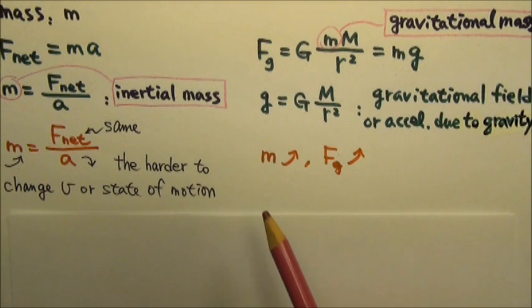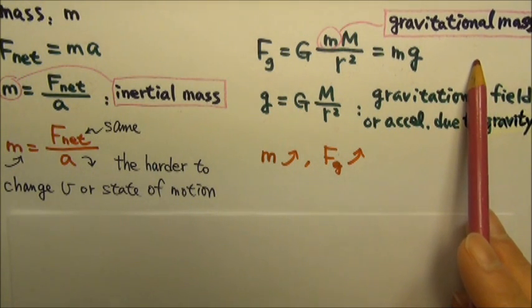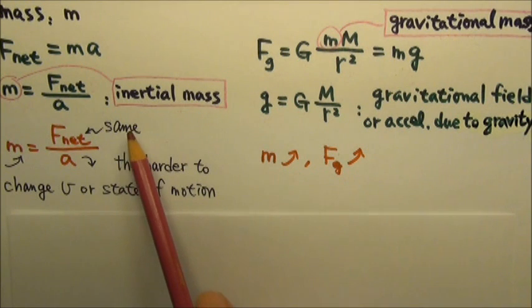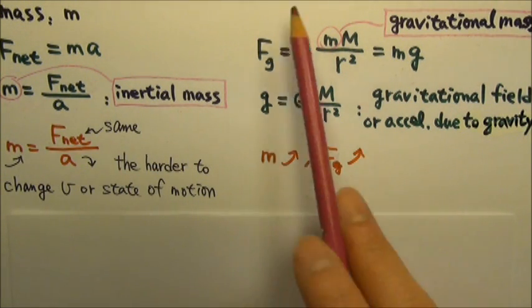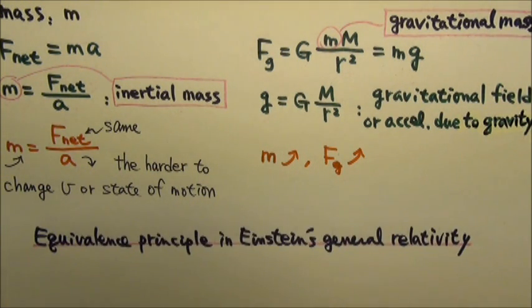If we can treat these two kinds of mass as the same thing, it means there must be a fundamental connection between motion and gravitation. This connection is called the equivalence principle in Einstein's general relativity.